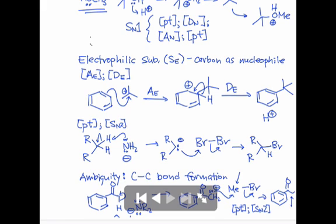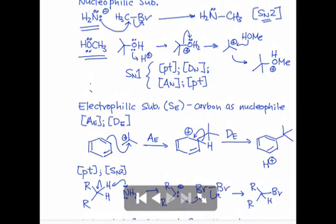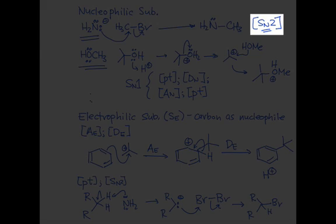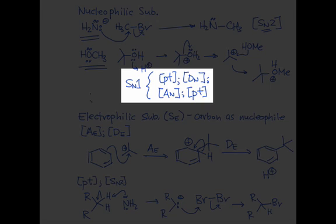To sum up, let's quickly review the common sequences of elementary steps that we see in substitutions. There's the SN2 mechanism, which can occur directly in a single step. We have the SN1 mechanism, which usually occurs through some kind of proton transfer, followed by DN and AN. Those are the critical steps. And then a final proton transfer, typically.